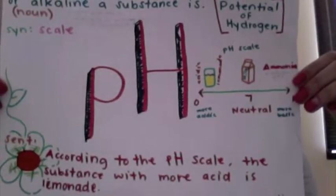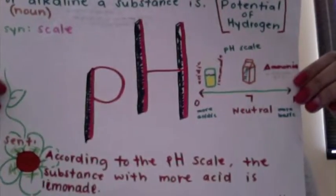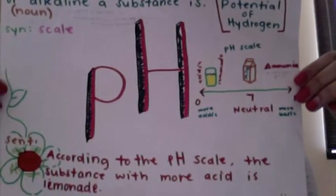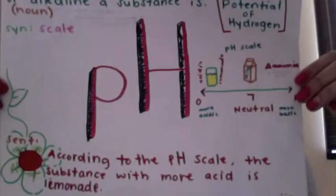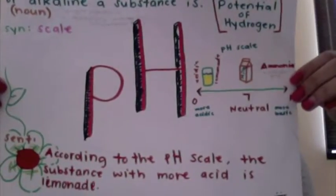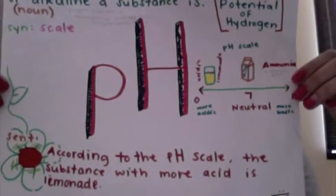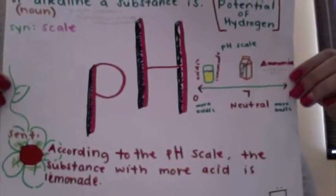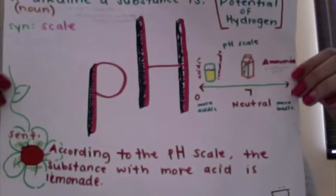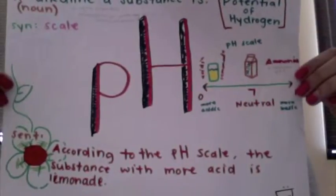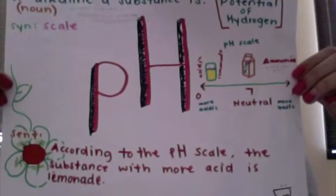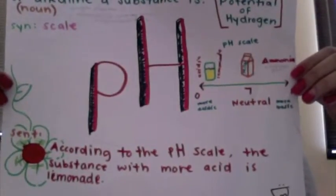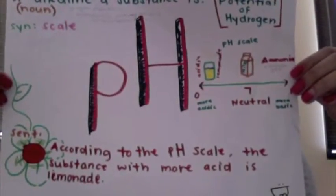pH, noun. This is a measure of how acidic or alkaline a substance is. The image on the side shows how the scale functions. 0 is more acidic, 7 neutral, and 14 more basic.